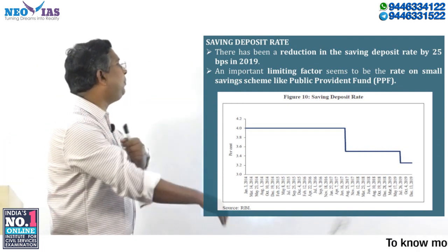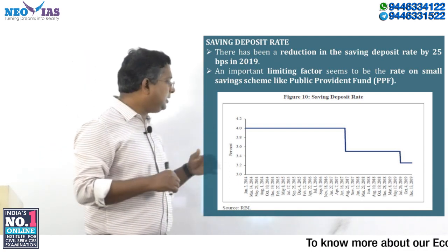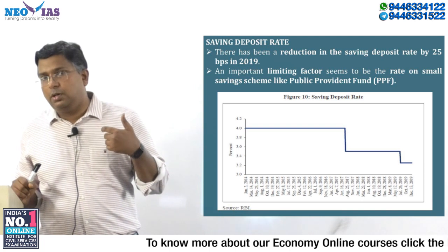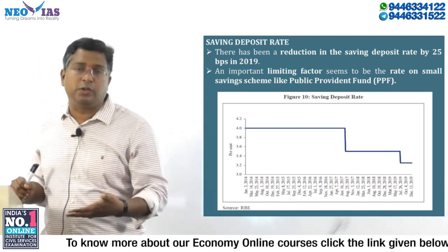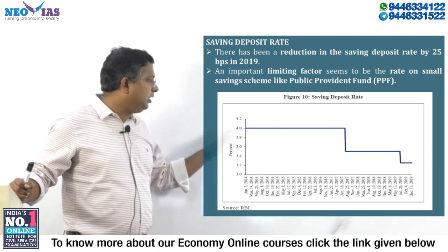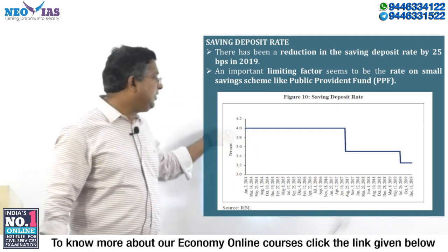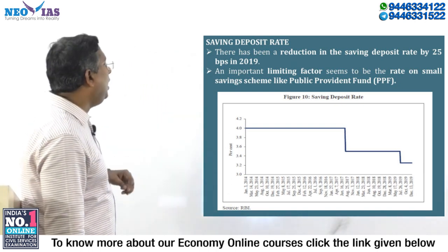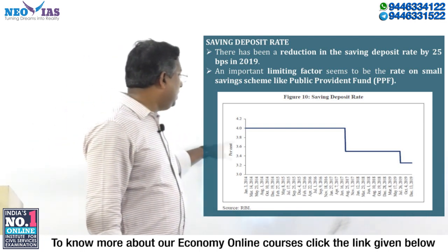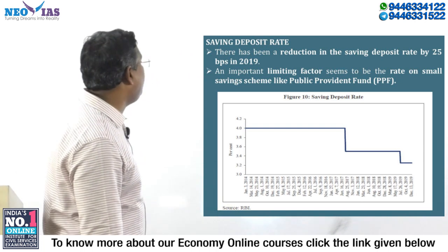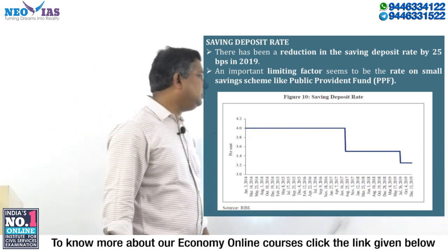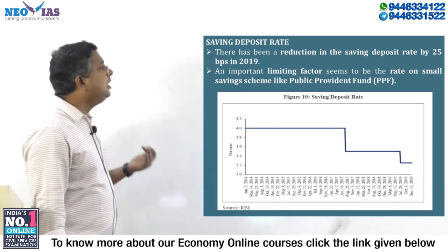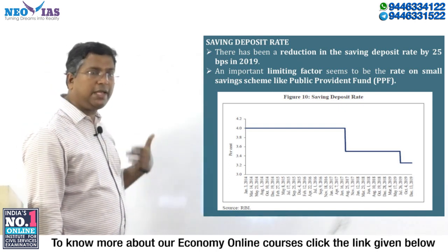Looking at the savings deposit rate — the rate banks give to customers on savings deposits — from 2014 to 2017 it was 4%. In 2017 it was cut to nearly 3.5%, and in 2019 there was a general cut of 25 basis points. Currently the savings deposit rate is at a very low rate of 3.25%, and almost all banks have cut this rate in 2019.